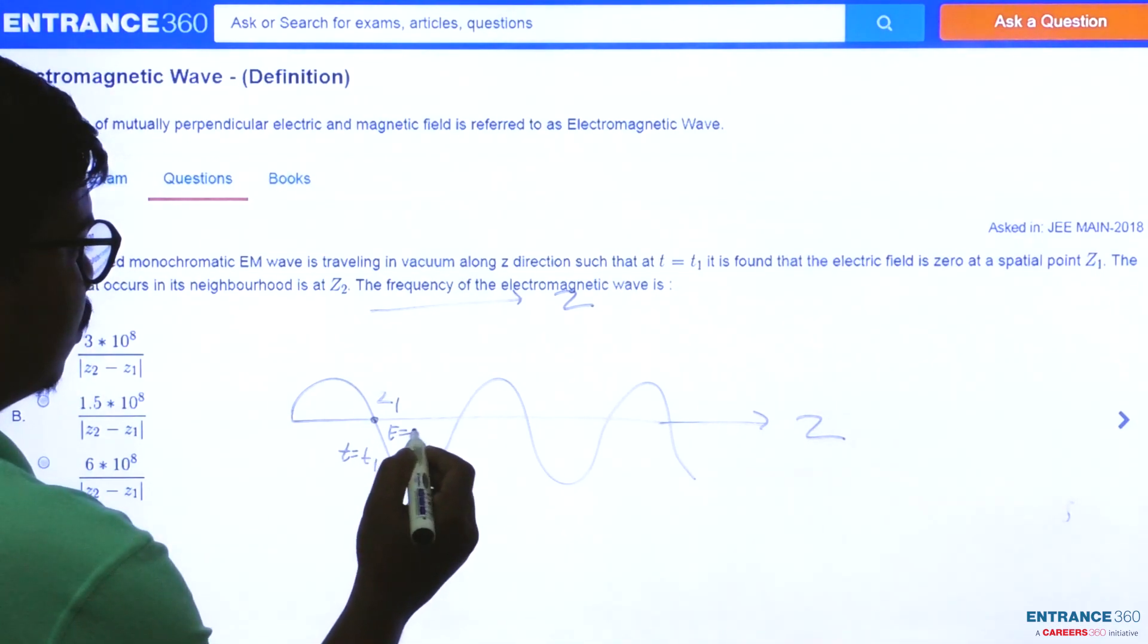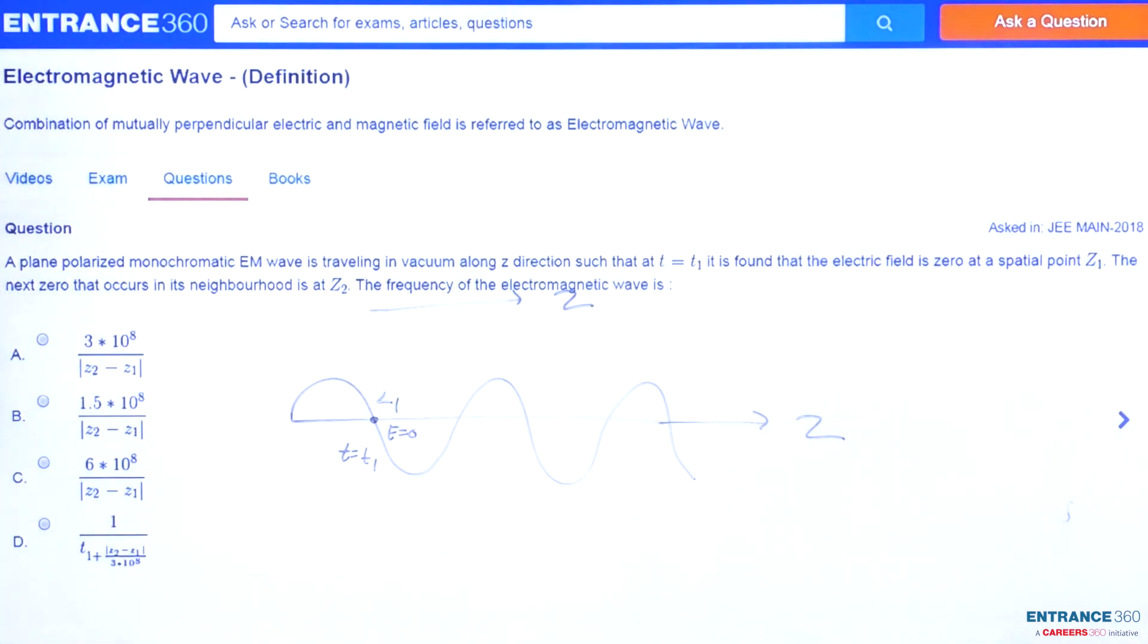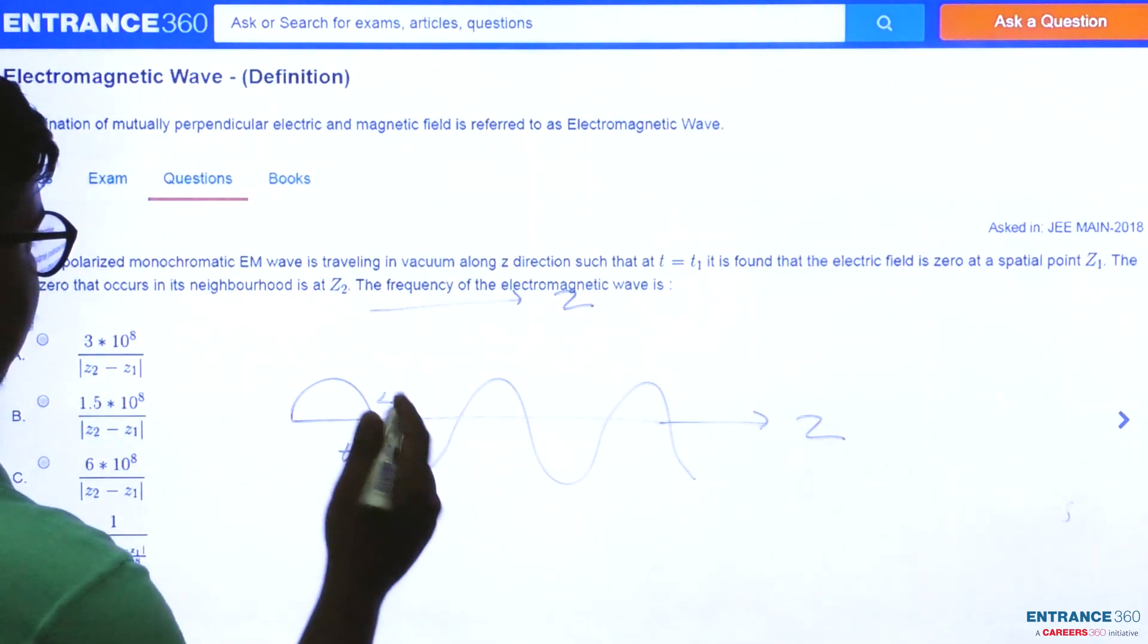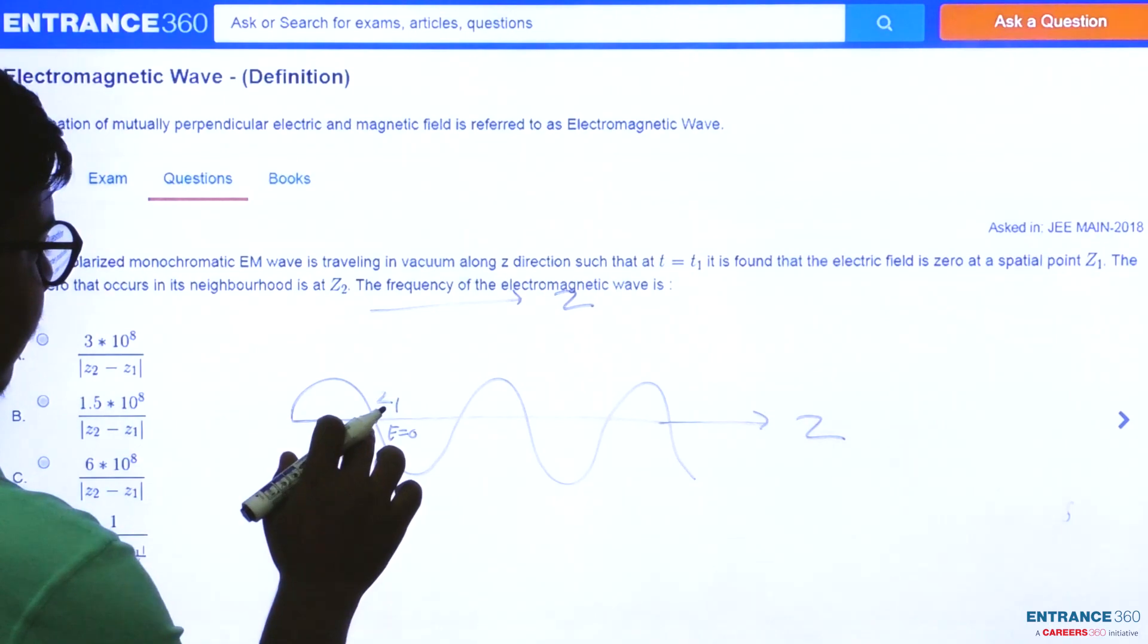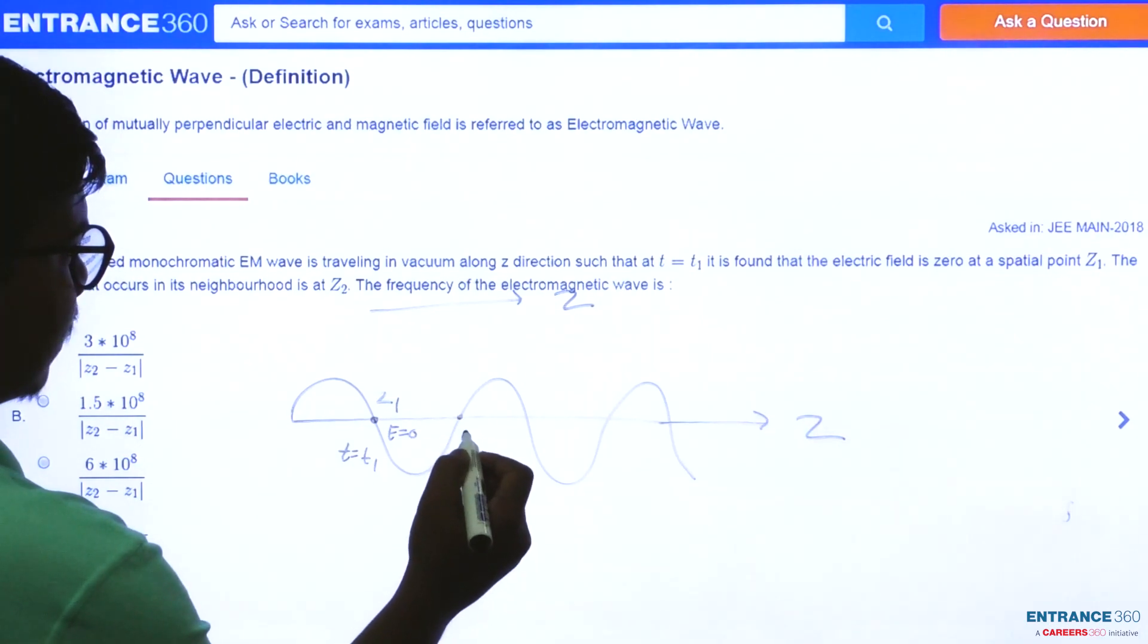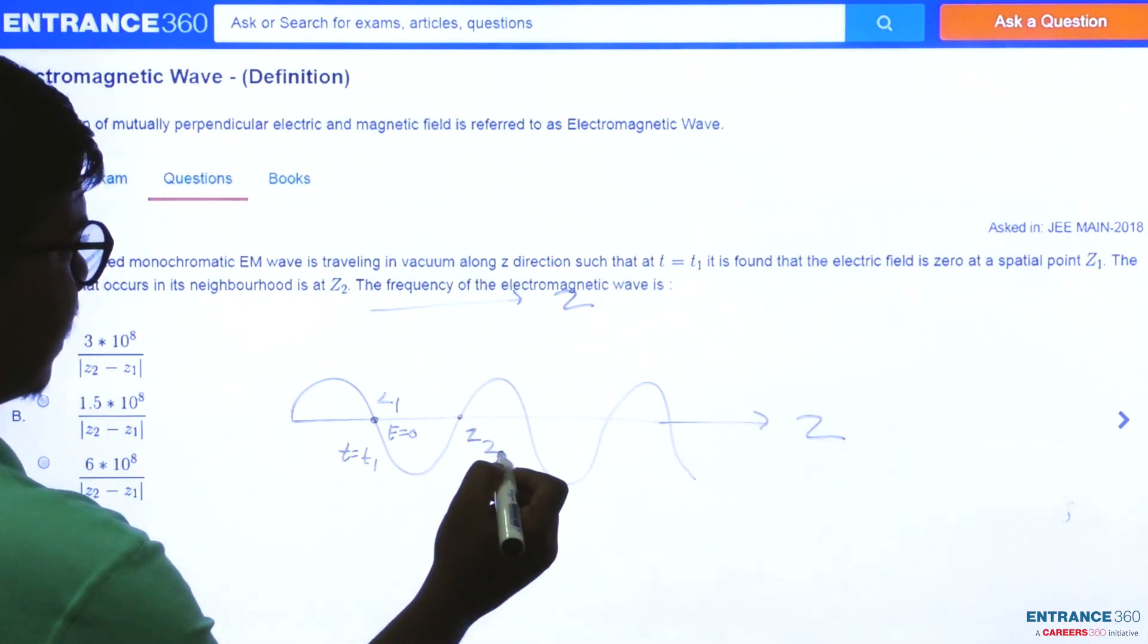We found E is equal to 0 here and the next 0 that occurs in the neighborhood was z2. So let this is E=0, the next E=0 is this which is z2.